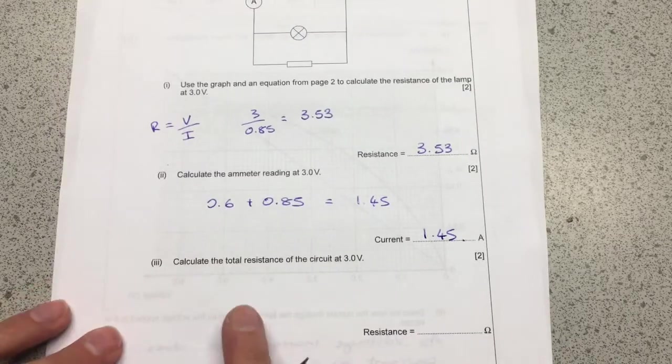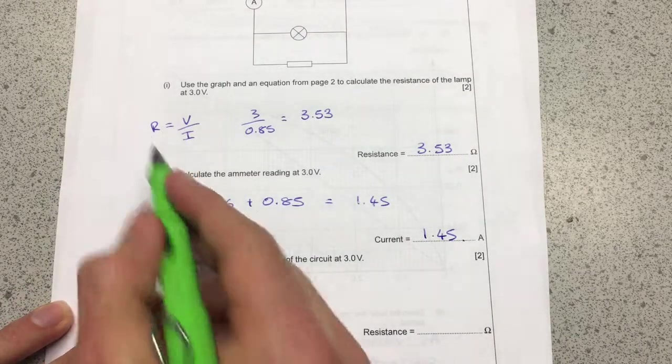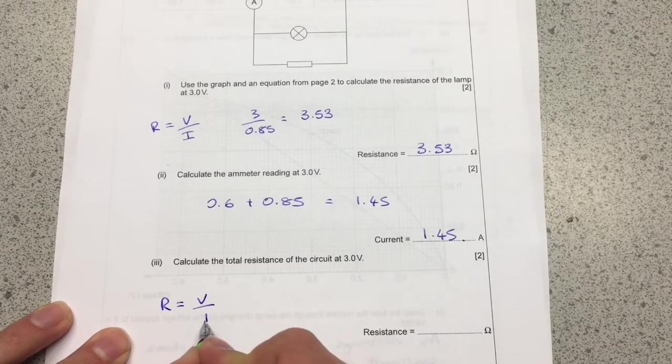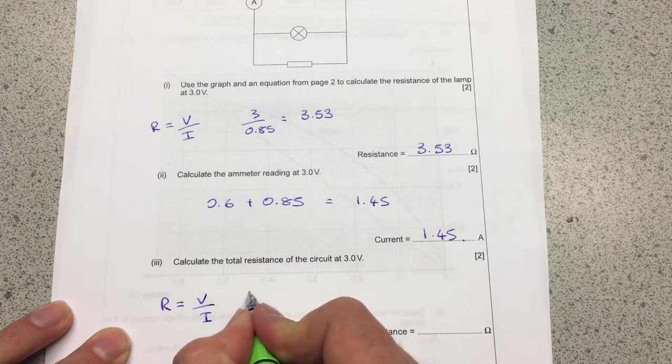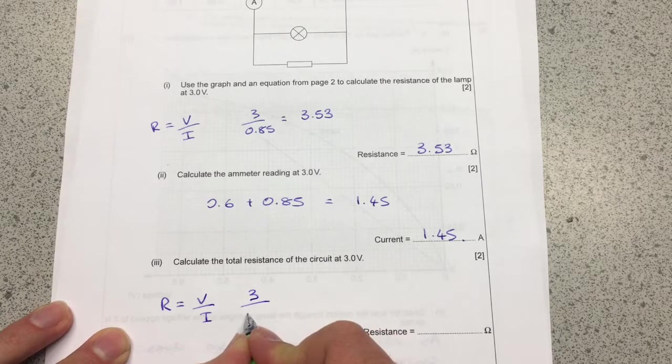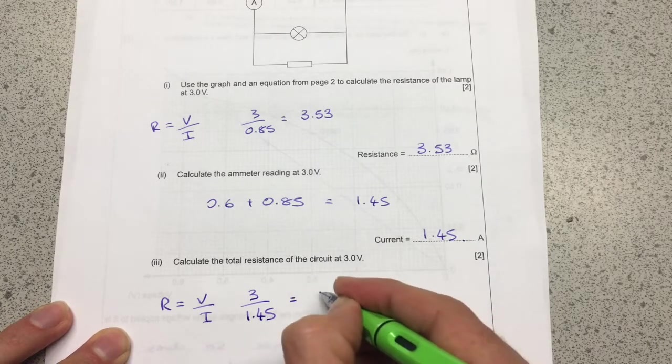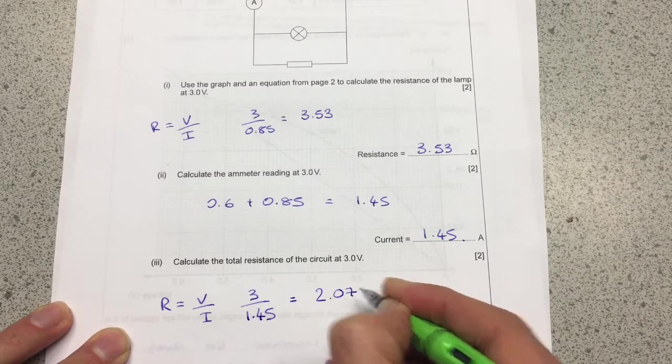Calculate the total resistance. Again, a couple of ways of doing this. But if we follow the same pattern as before, if I take my total current, I can pop it in. So the three for the voltage, 1.45. Again, into the calculator. Out comes 2.07.